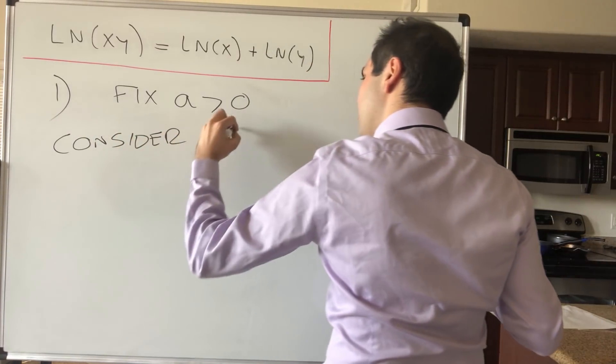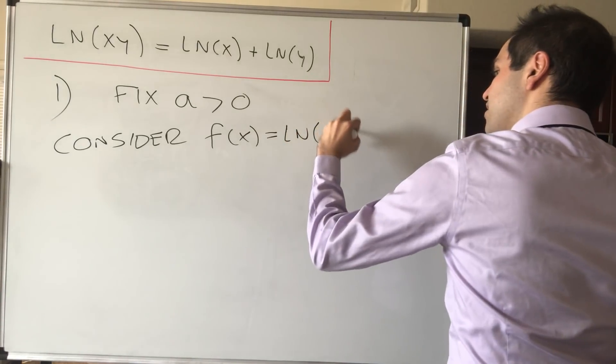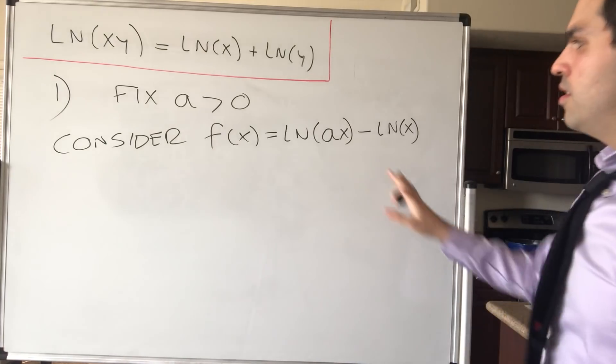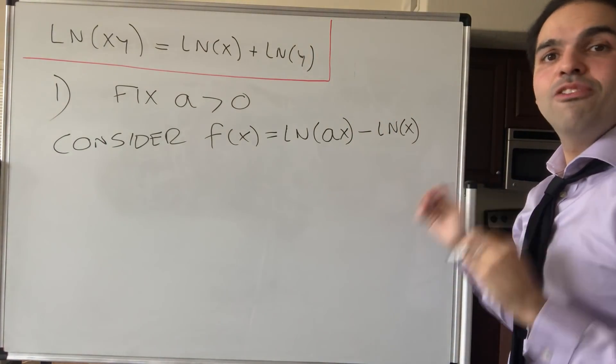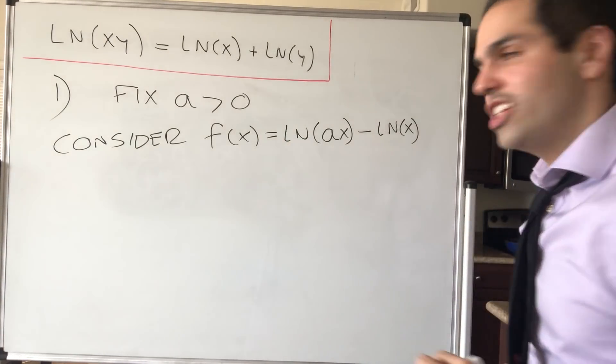So fix a positive and consider the following function. Consider what's called f of x to be ln of ax minus ln of x. So ideally we would like this to be equal to ln of a, which is a constant. So in order to do that, let's just differentiate f.